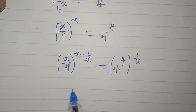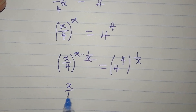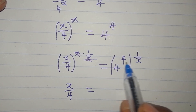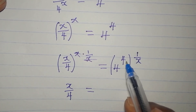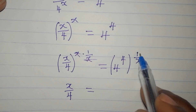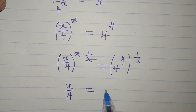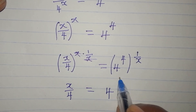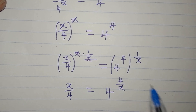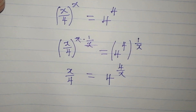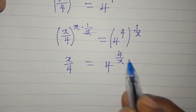The x powers cancel on the left, leaving x over 4. On the right, when you have a bracket with powers inside and outside, they multiply: 4 times 1 over x gives 4 over x. So on the left we have x over 4, and on the right we have 4 to the power of 4 over x.